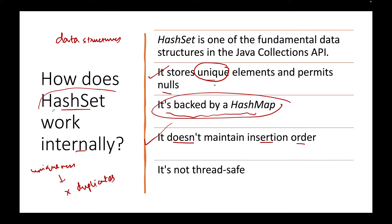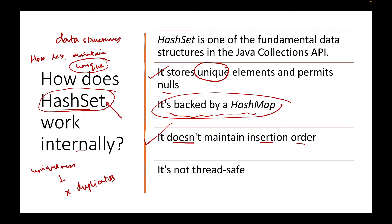HashSet as a class is not thread-safe, which means if there are multiple threads trying to manipulate the same HashSet it can result in a race condition or incorrect results. What we want to understand is: when we say HashSet allows unique elements, how does it maintain that uniqueness? That is what we are going to learn by understanding how HashSet's internal implementation looks like and how it is related to the point that it is backed by a HashMap.